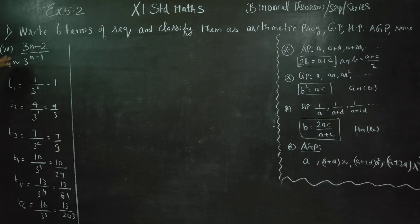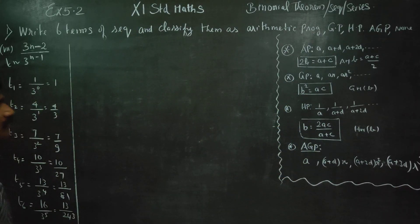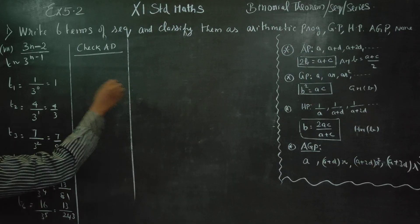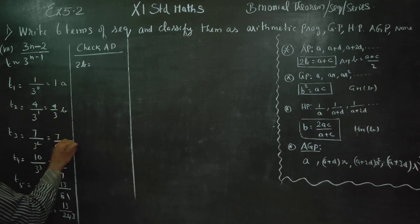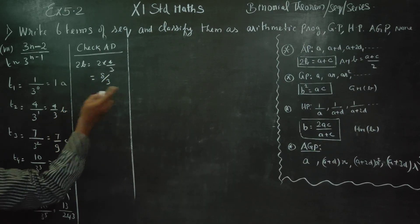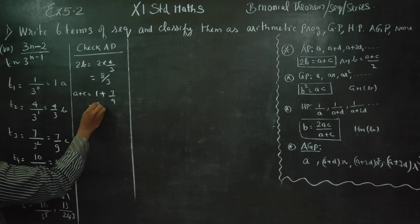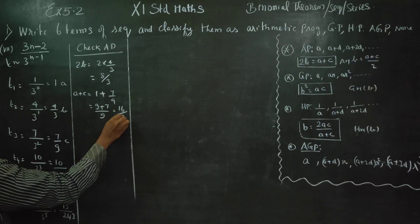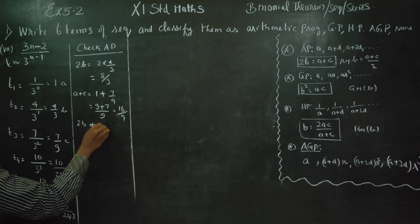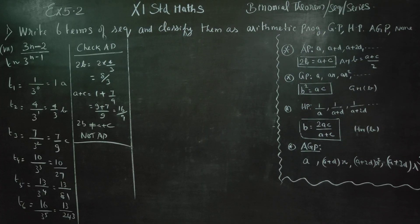These are the 6 terms. After finding them, we check for AP, GP, HP, and AGP. Checking for AP: we need 2B = A + C. Here A=1, B=4/3, C=7/9. So 2B = 8/3, and A+C = 1 + 7/9 = 16/9. Since 8/3 ≠ 16/9, it is not an AP.